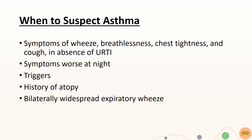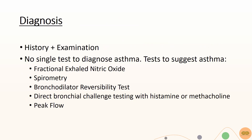The diagnosis of asthma includes performing a thorough history and examination. There is no single test available to diagnose asthma, but there are multiple tests to support or suggest the diagnosis. Fractional exhaled nitric oxide involves the patient breathing into a mouthpiece attached to a handheld monitor, and the levels of nitric oxide are measured. A higher level of nitric oxide in the patient's breath may indicate asthma.